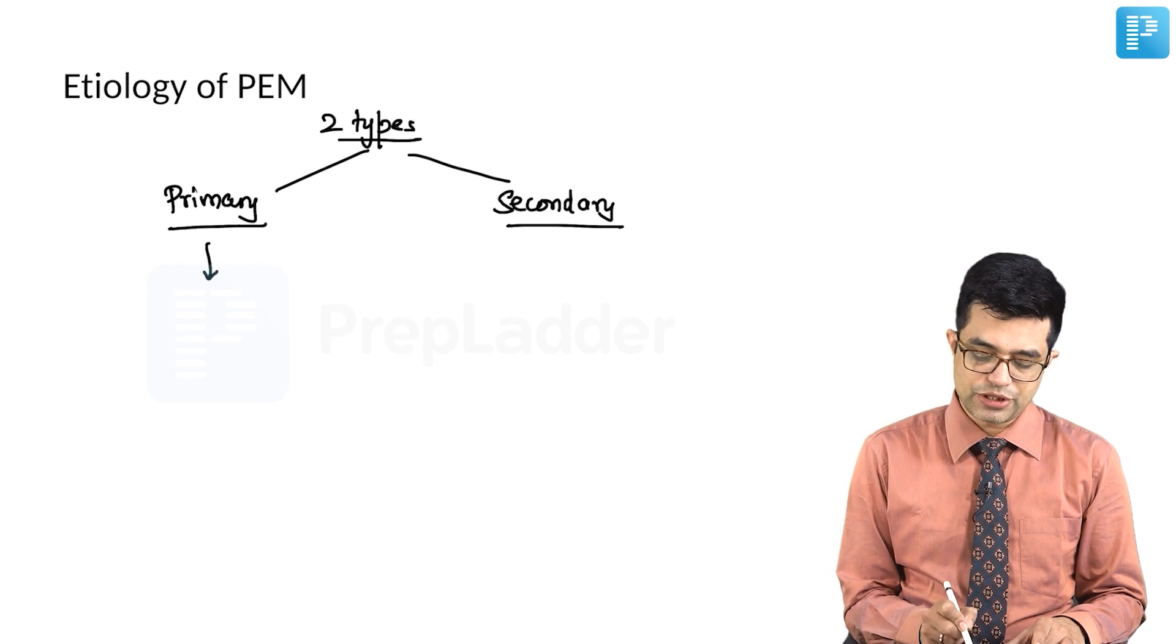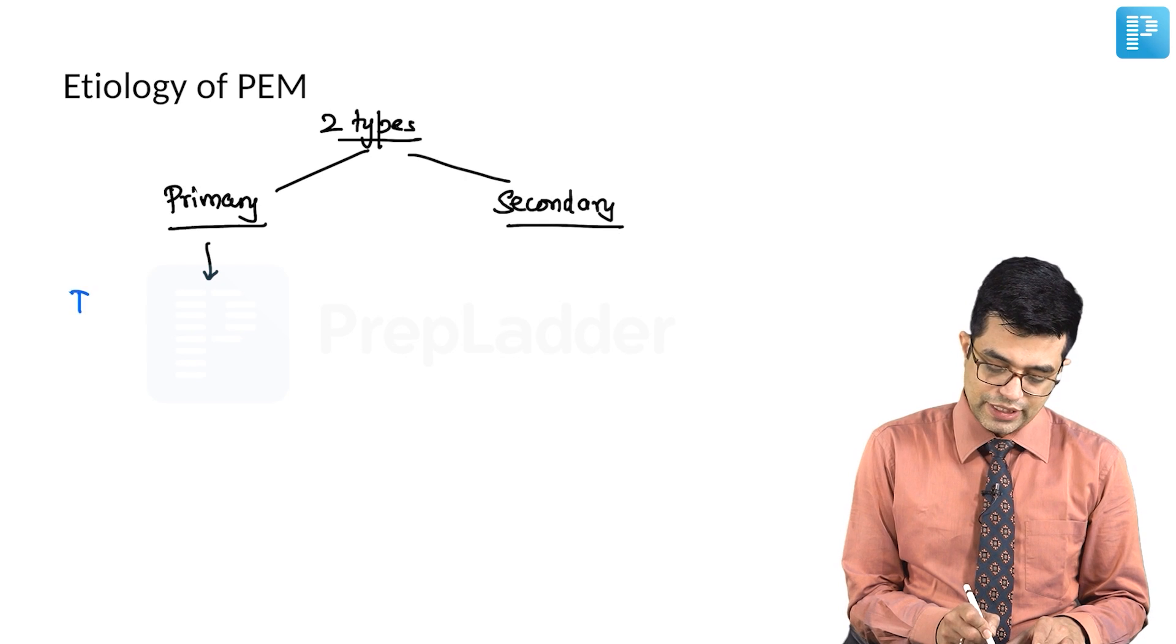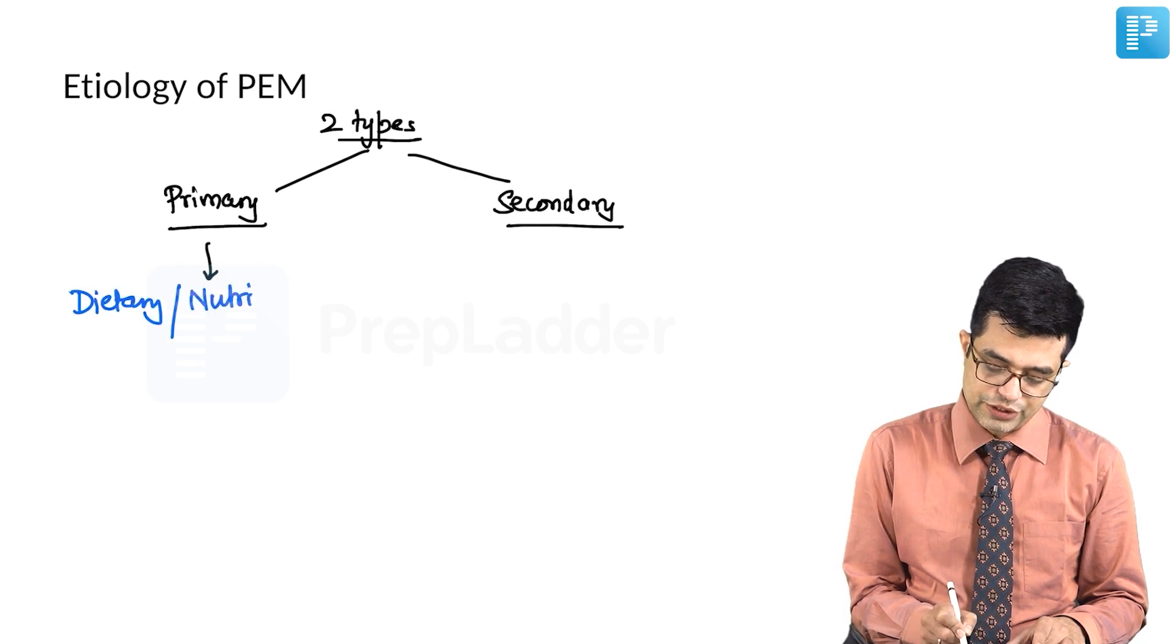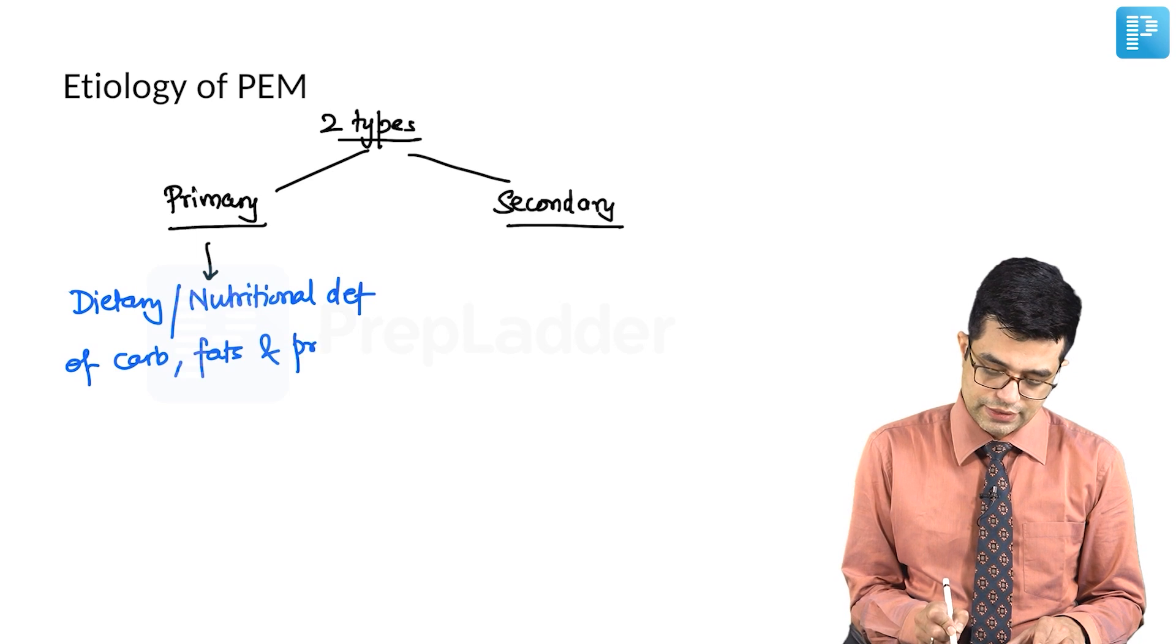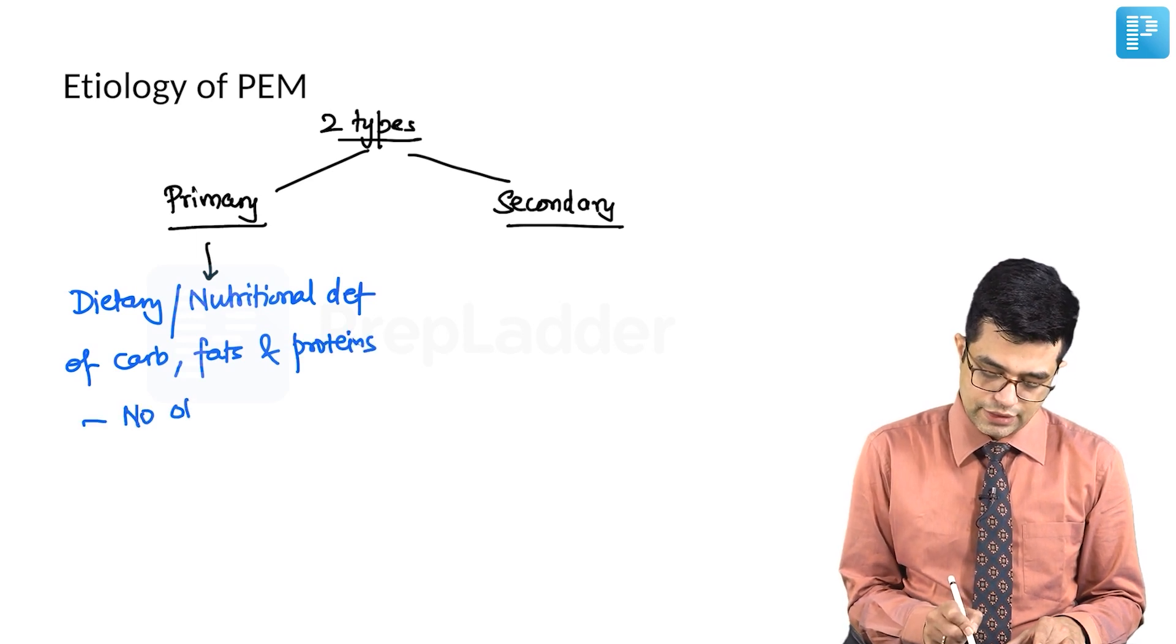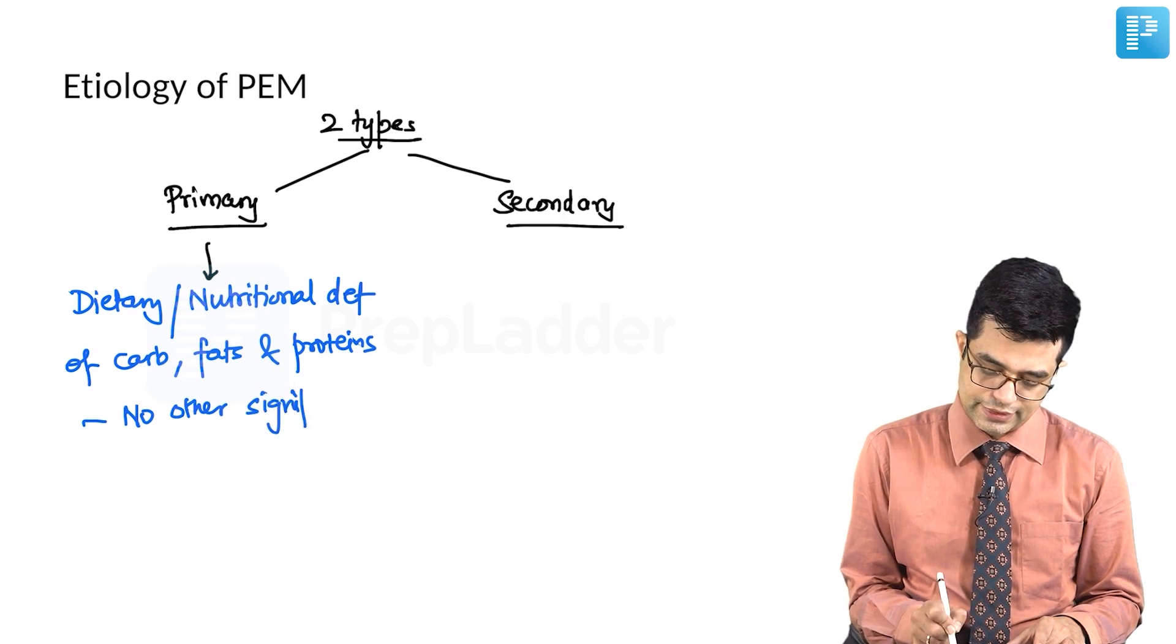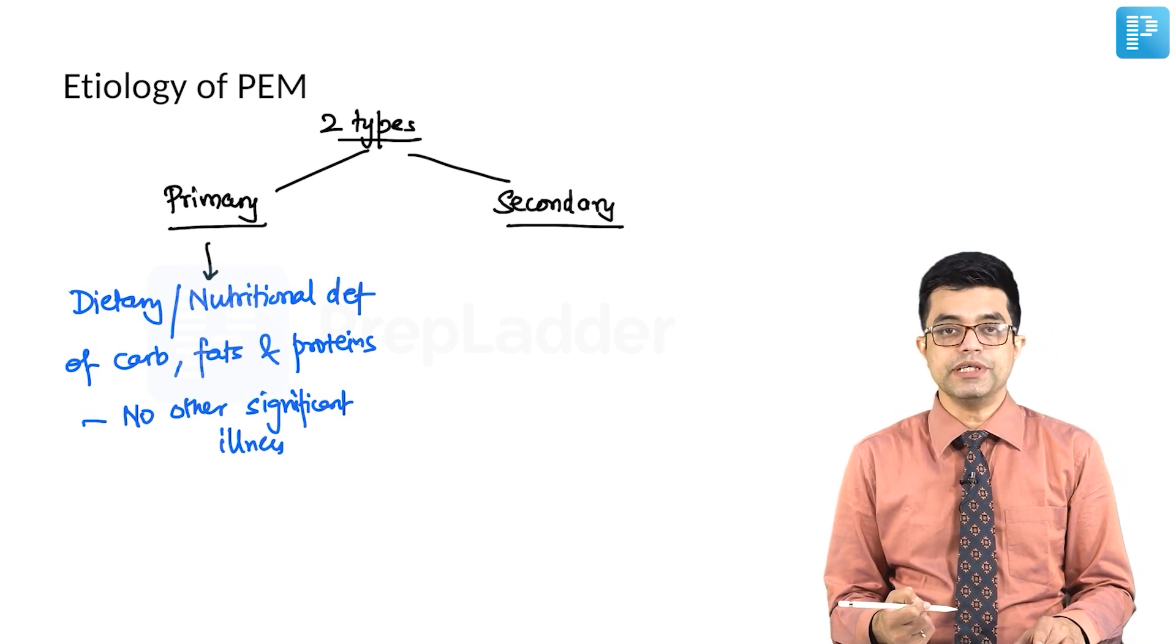Primary protein energy malnutrition is that in which there is dietary or nutritional deficiency related to carbohydrates, fats and proteins. There is no other significant illness. So only the intake is less that causes primary PEM.